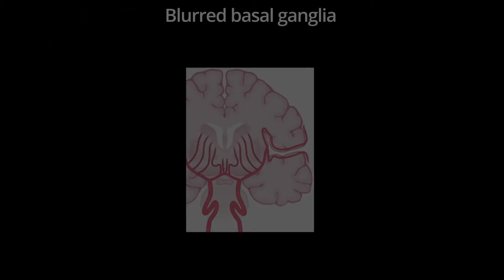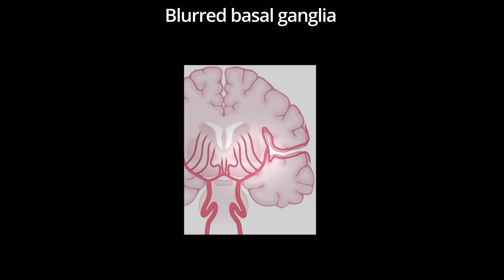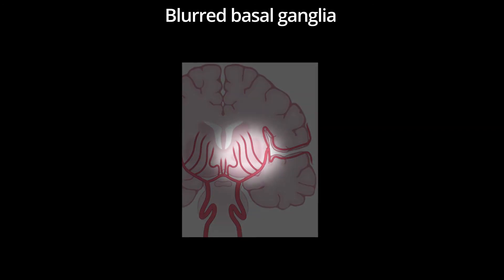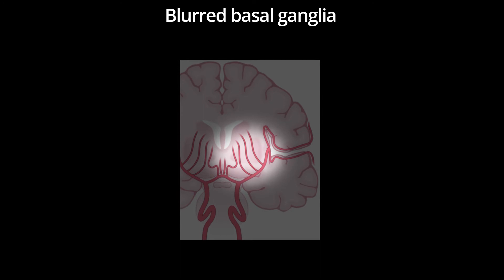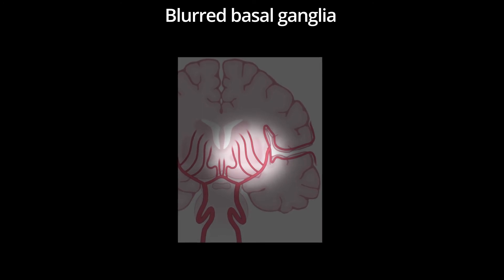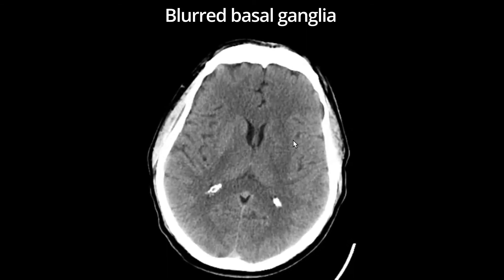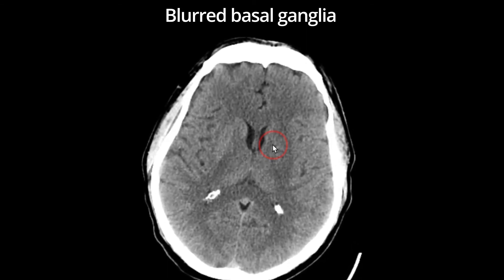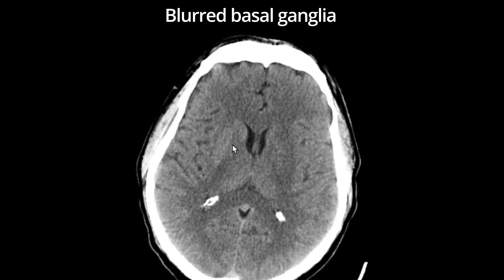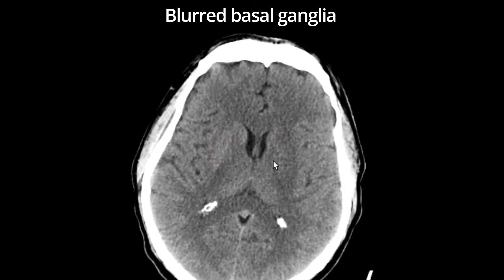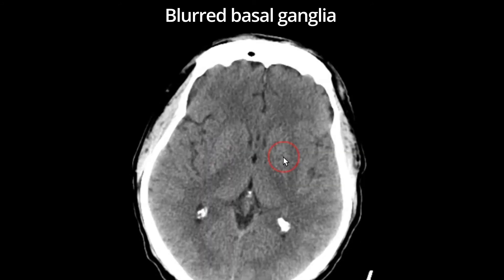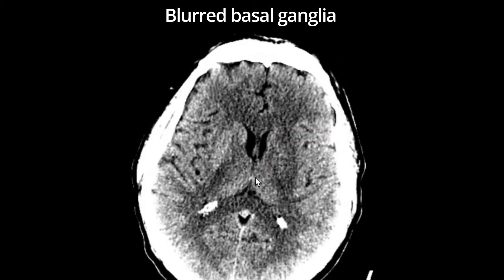If there is a proximal MCA occlusion, then oftentimes the basal ganglia will be affected first, because it is supplied by small lenticulostriate arteries, as shown here. These arteries are end arteries, which makes them particularly sensitive to decreased blood flow. Here is an example of left MCA ischemia, resulting in a blurred left basal ganglia outline. Compare the left basal ganglia to the right — the left is poorly defined and has areas of low attenuation. These findings are more obvious on the stroke window. Always use your stroke window to help find subtle findings of ischemia.